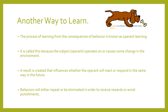Operant learning is the process of learning from the consequences of behavior. It's called this because the subject, or operant, operates on or causes some change in the environment, and this result influences whether the operant will respond the same way in the future. Behaviors will either repeat or be eliminated in order to receive rewards or avoid punishments. Think of a stray cat or dog in the local area — people put food out for these animals, and the animals continuously return for the food. The animal has learned to go to that area for food.